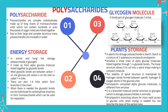In plants, the storage polysaccharide is starch, which is a mixture of two substances: amylose and amylopectin. Amylose is a linear chain of alpha glucose molecules linked together through 1-4 glycosidic bonds. Its linear structure allows it to coil into a spiral shape, making it a compact molecule. The stability of the spiral structure is maintained by hydrogen bonds formed between specific atoms in the glucose units. Amylopectin, also composed of alpha glucose molecules, is a branched molecule with a structure similar to glycogen. Its branches allow for more rapid access to glucose units when energy is needed.